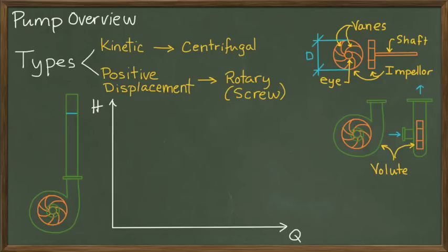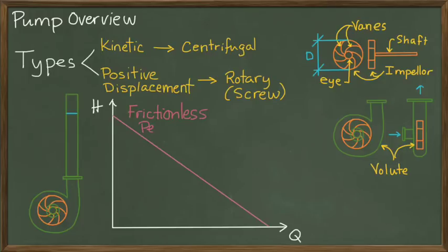Another way to look at this is in terms of what we call the pump performance curves. If we plot the relationship between discharge and head, one can see that as discharge increases, head decreases, or alternatively, as head increases, discharge decreases. For a frictionless system, that's a perfectly straight-line relationship between discharge and head.